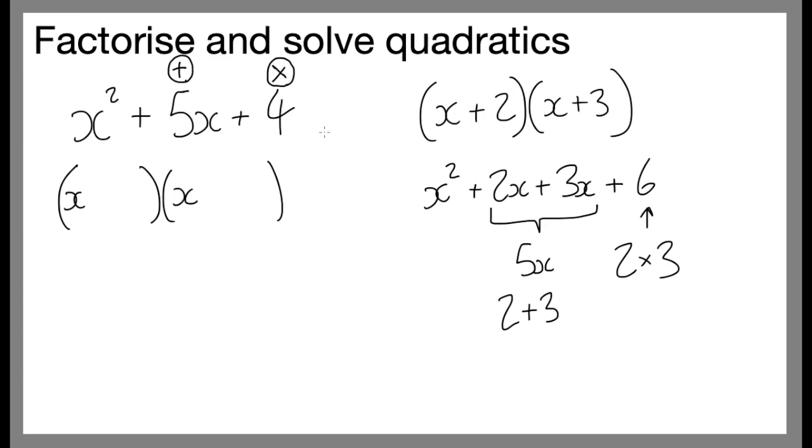So the first thing to do is think about 4. What are the factors of 4? Well, I could have 1 and 4, or 2 times 2. Now, which of these factors add together to make 5? Well, clearly 2 plus 2 is 4, so that doesn't work. 1 plus 4 is 5, so it must be this one. So I put in my brackets, x plus 1, and I put x plus 4. That is now factorised.